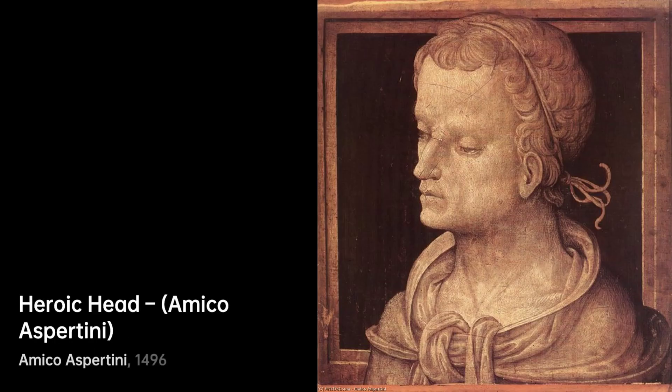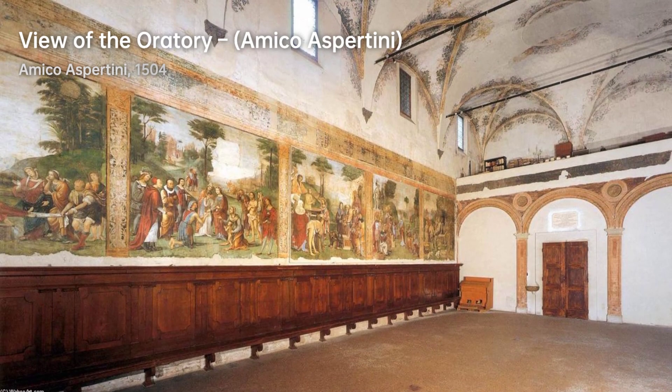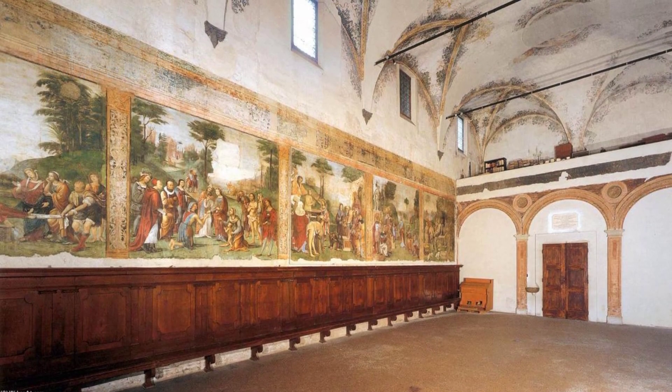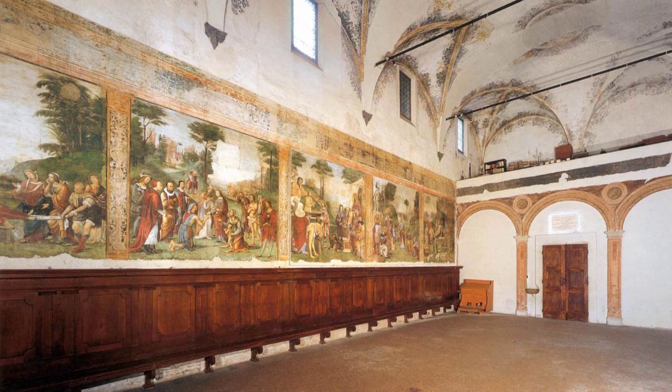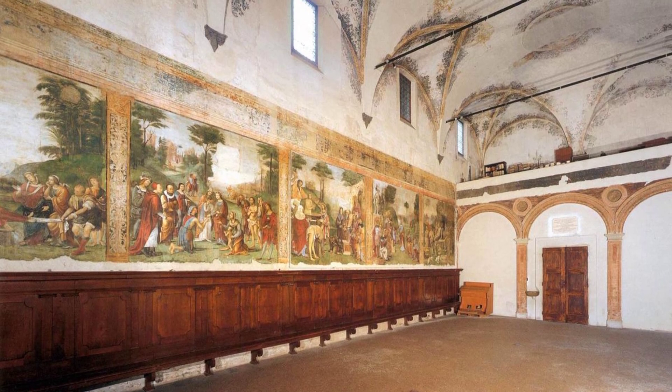Amico Aspertini was born into a family of painters in Bologna. He studied under renowned masters such as Lorenzo Costa and Francesco Francia. At a young age, he showed great promise and traveled to Rome with his father in 1496.